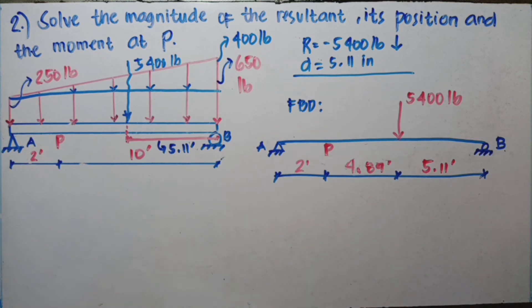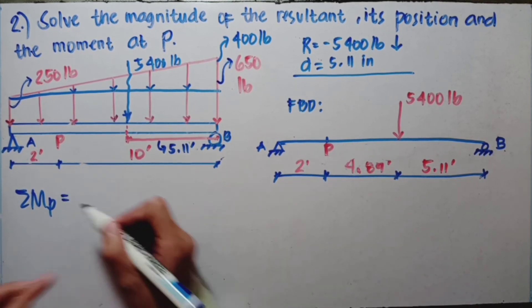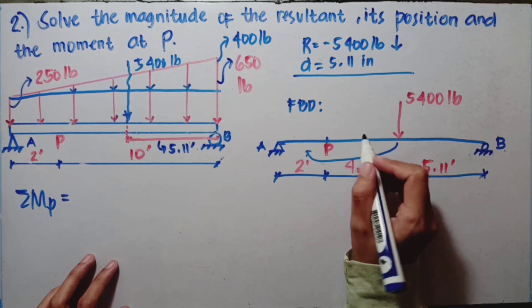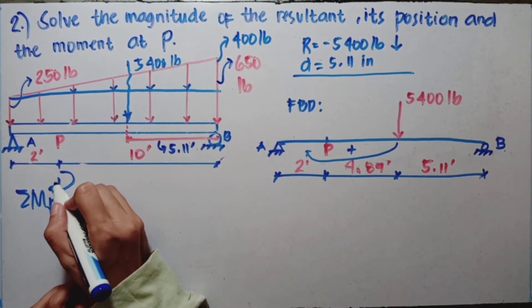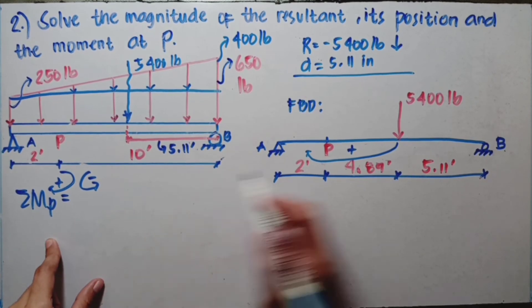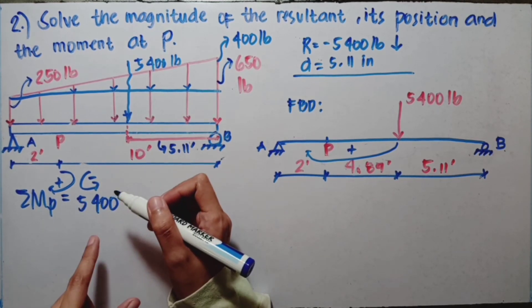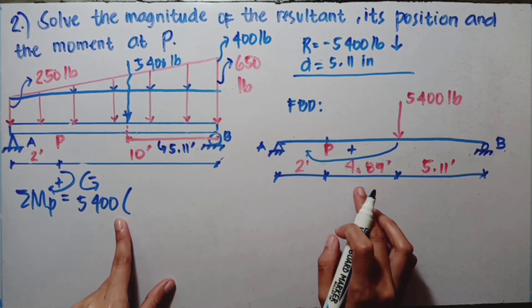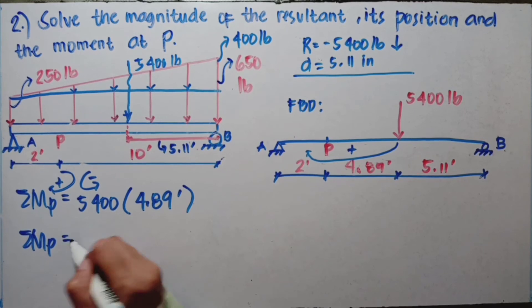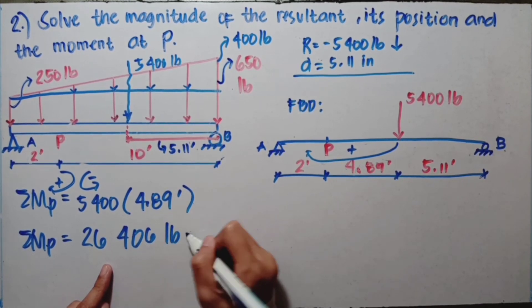For summation of moment at P — taking the moment at P now — assuming all clockwise moments are positive and counterclockwise are negative. For summation of moment at P: the rotation of the 5,400 pounds toward P is clockwise, so it's positive. 5,400 pounds times its moment arm of 4.89 inches. When we calculate and multiply, we get the answer of 26,406 pound-inches.